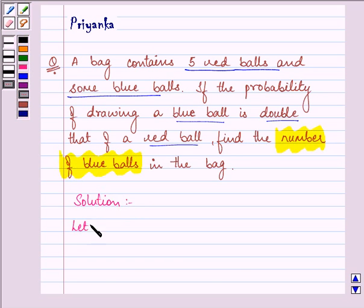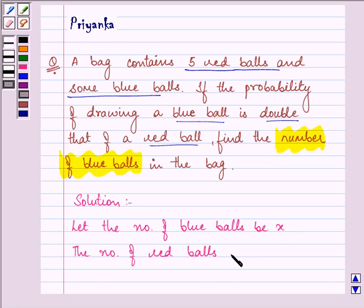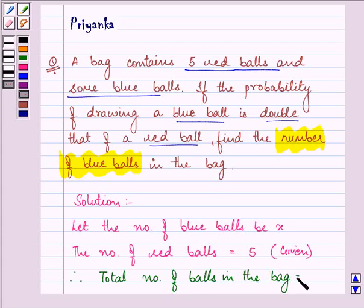Here let the number of blue balls be x. The number of red balls is given to us in the question as five. So therefore we can say that the total number of balls in the bag are equal to blue balls plus red balls.